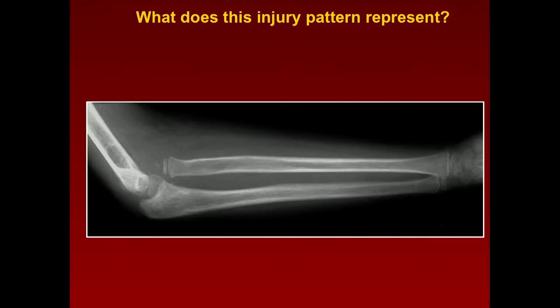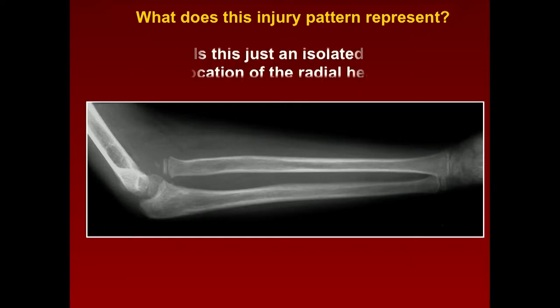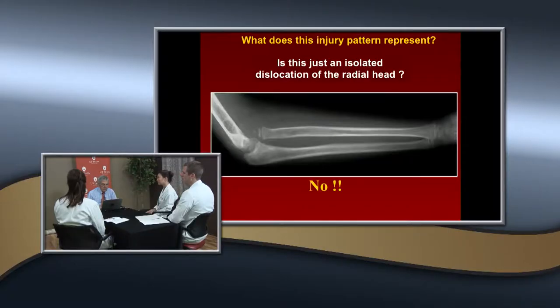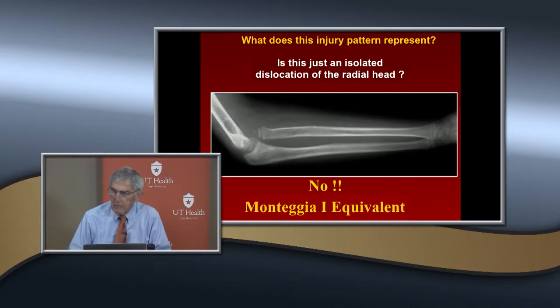Years ago, in our first edition of our textbook and in the literature, this was defined as an isolated dislocation of the radial head. But is this just a single entity? No. The other part of it is bowing of the ulnar shaft — a plastic deformation of it — and a lot of times that's totally missed.